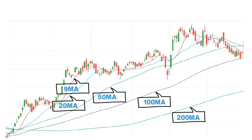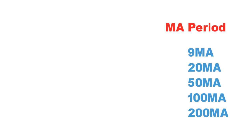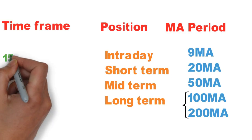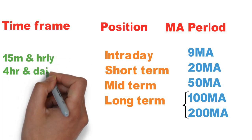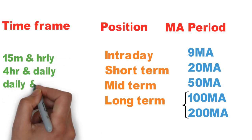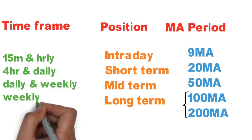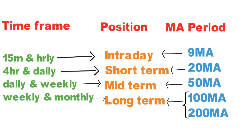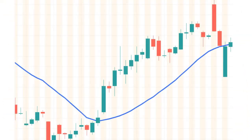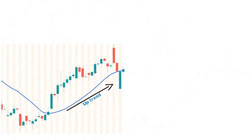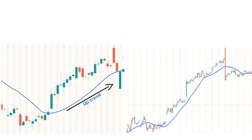Instead of changing the moving average period, we just need to change the time frame. For intraday, use 15-minute and hourly time frames. For short-term trend, look at 4-hour and daily time frames. For mid-term, look at daily and weekly charts. For long term, look at weekly and monthly time frames. The golden rule: when the 20 moving average slopes up on the 1-hour time frame, it is a sign of uptrend for intraday.